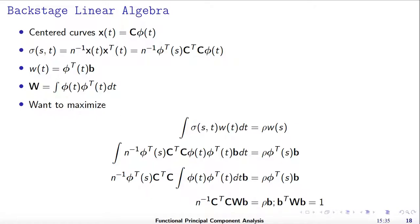Because this equation holds for any given time s, and phi of s is the vector of basis functions, if you look at the left side as coefficients to the basis functions phi of s, and b is the coefficient to phi of s, then if these two are always equal to each other, their coefficients must also always equal each other.